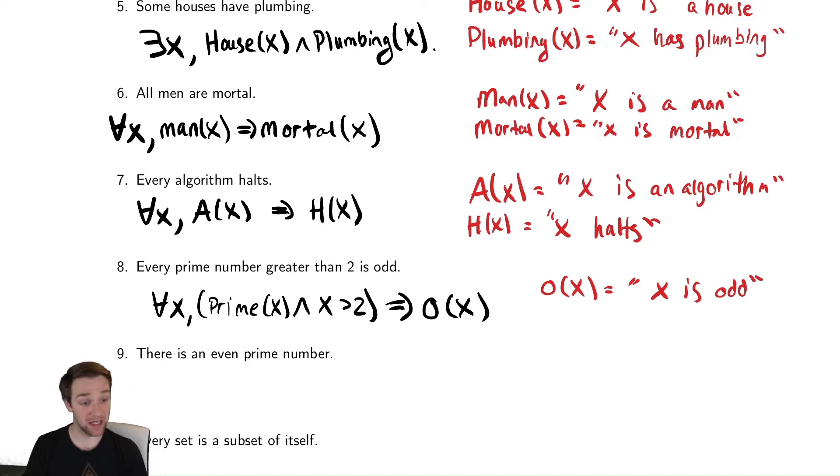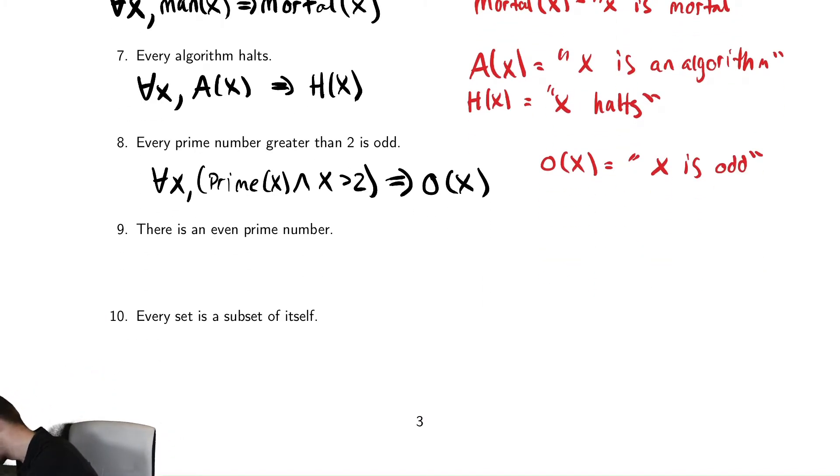The next one says there is an even prime number. So we're probably going to need something to talk about being even. So we're going to write down even of x, so we're going to know E, because we're lazy. I'm going to say x is even. And then this is there is. There is in math says there exists something exists, just one. So this is there exists something, an x, such that it is prime and it is even.